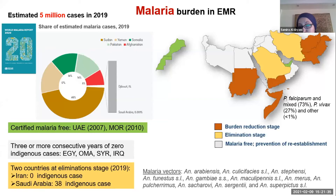The six burden reduction stage countries are Afghanistan, Djibouti, Pakistan, Somalia, Sudan, and Yemen. The majority of malaria parasites transmitted are Plasmodium falciparum in the Horn of Africa countries and the region. We also have Plasmodium vivax, mainly in Central Asia — in Pakistan, Afghanistan, and Iran.